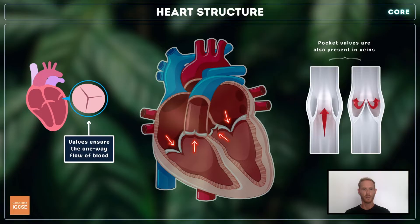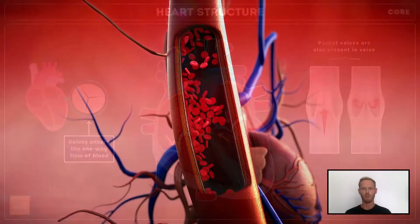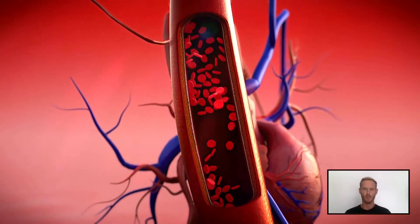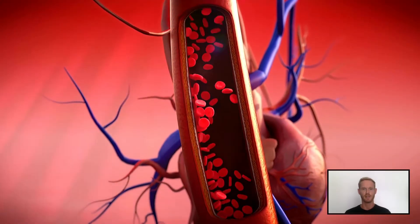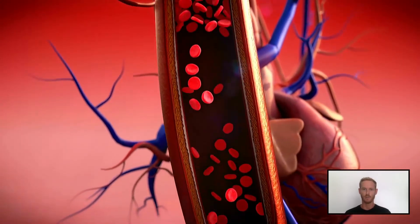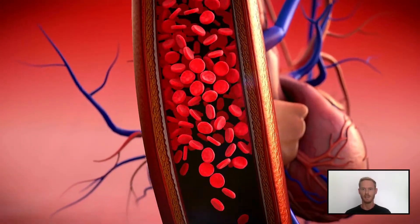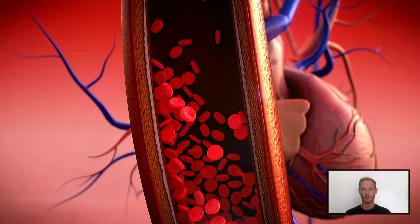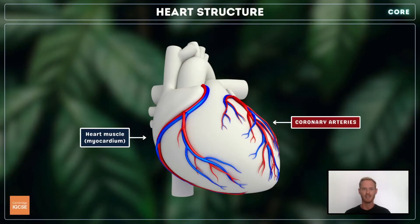Valves are also present in the veins to prevent the backflow of low-pressure blood. The role of the heart is to pump blood throughout the body, but the muscular substance of the heart itself, known as myocardium, needs a supply of blood too. This is delivered in coronary arteries, which form a network throughout the organ.